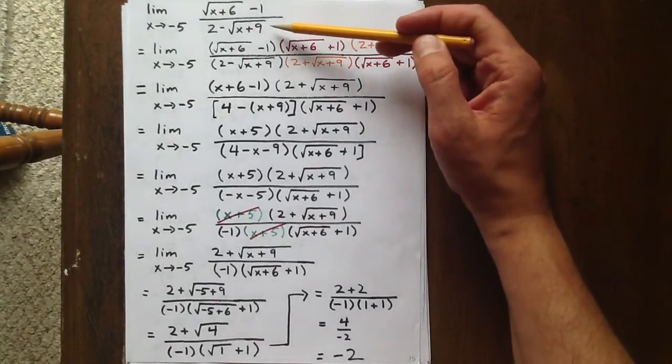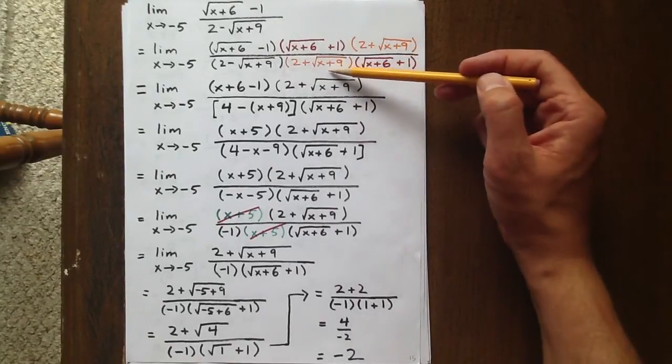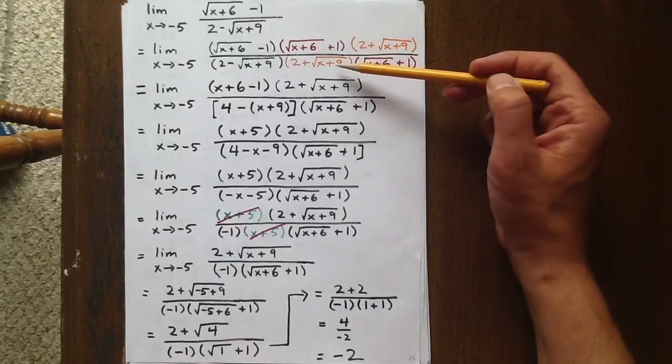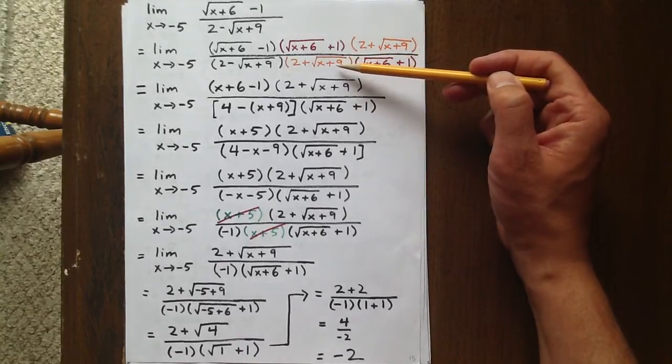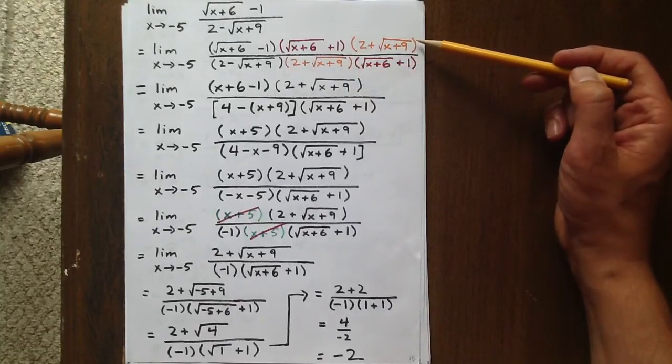But to rationalize the denominator, we need to multiply by 2 plus the square root of x plus 9. If we multiply by a factor of 2 plus the square root of x plus 9 in the denominator, we need to do the same thing in the numerator.